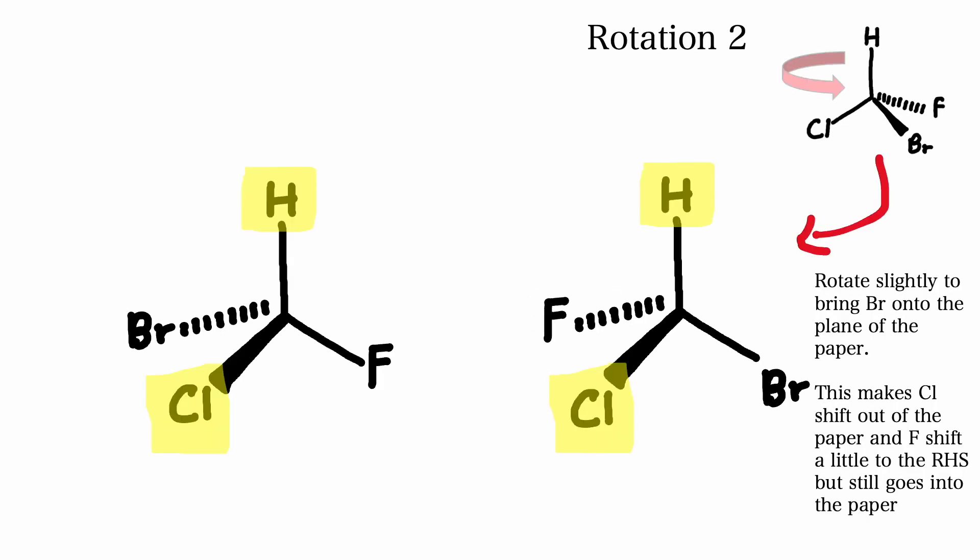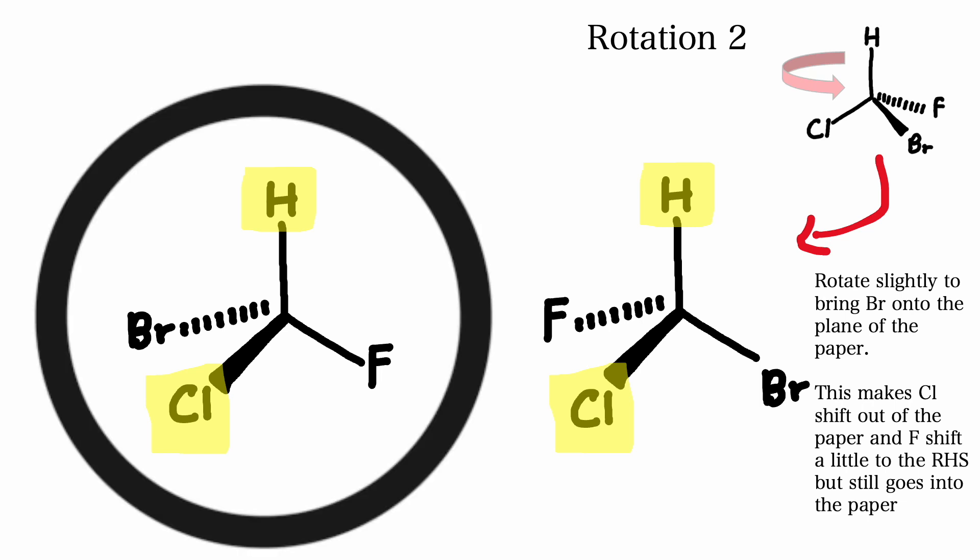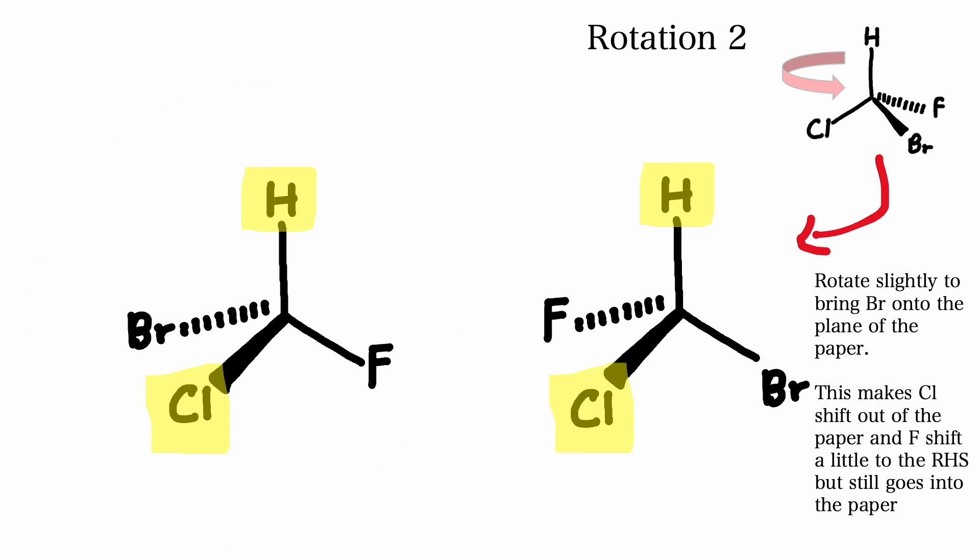If we rotate it again slightly anticlockwise to try and get it to superimpose on the original molecule that we took the mirror image of, we see that bromine is now on the plane of the page, chlorine is coming out of the page, and fluorine has shifted a little to the right-hand side but is still on the plane of the page.